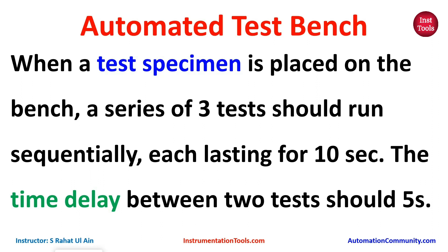When a test specimen is placed on the bench, a sensor will detect its presence. When the sensor gets activated, the first test will start and it should run for 10 seconds. After test 1, there will be a delay of 5 seconds, and then test 2 should run for another 10 seconds. After that, there will again be a delay of 5 seconds, and then test 3 will run for 10 seconds. In this way, the process will end.